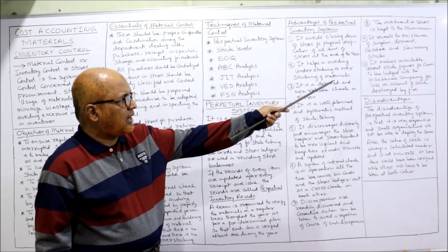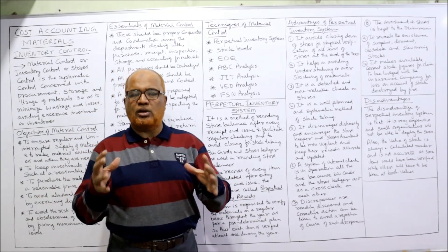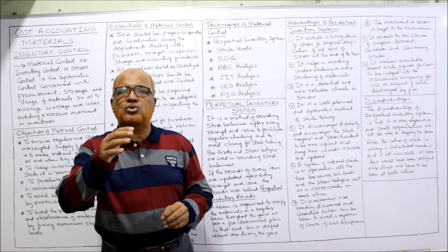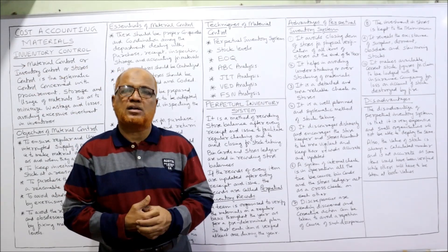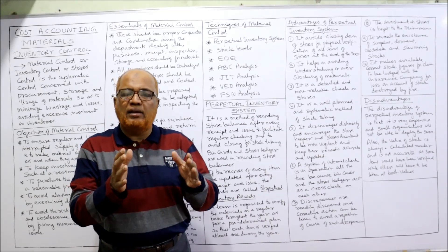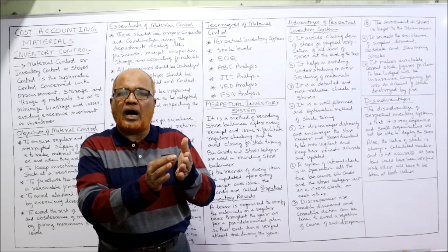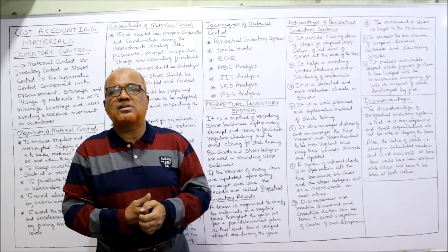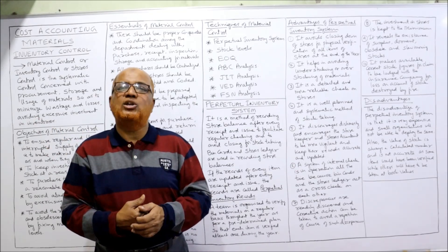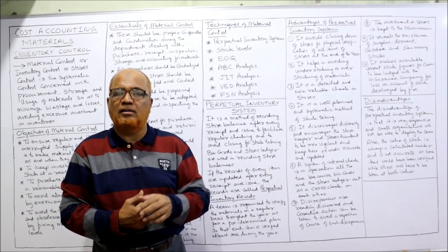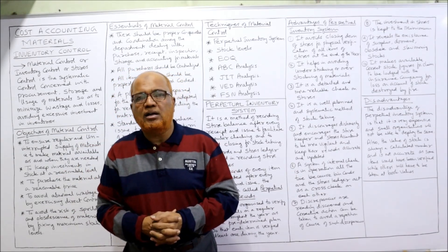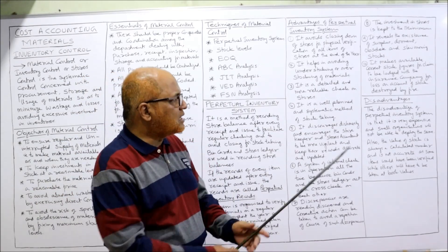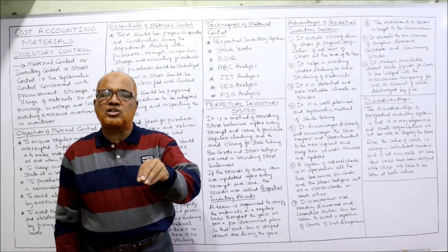Another advantage is that it makes available correct stock figures for insurance claims. If an insurance policy is taken on stock and a fire occurs, the business must lodge a claim with the insurance company. With the perpetual inventory system, the value of stock on the date of the fire can be readily determined, making it easier to put a claim before the insurance company for loss of stock by fire.